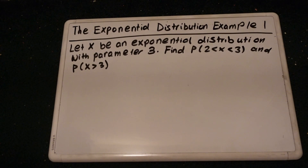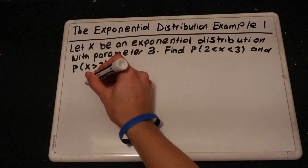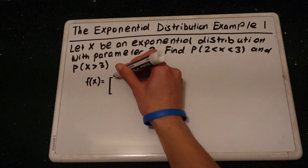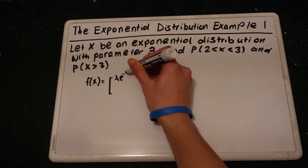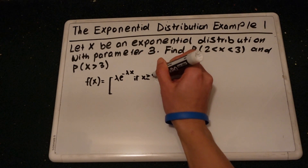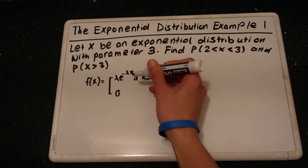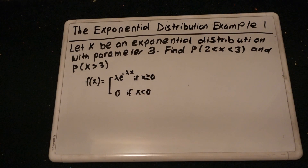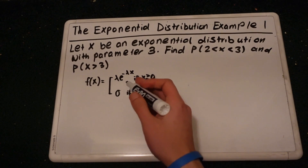This is an example of an exponential distribution. So let me write down the formula for the exponential distribution. It would be f of x is equal to lambda times e to the negative lambda x if x is greater than 0, or 0 if x is less than 0. If a continuous random variable whose probability density function is given for some lambda greater than 0 is said to be an exponential random variable, which is this formula.